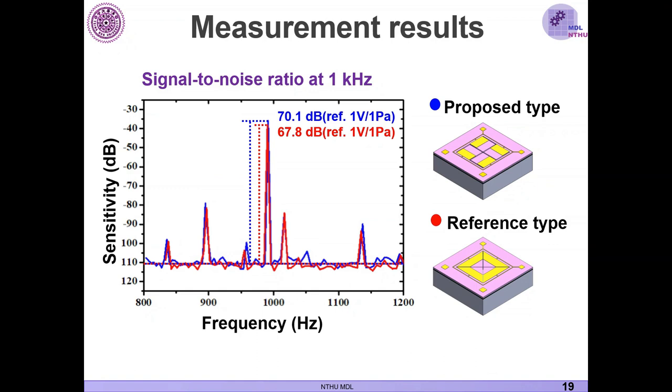Okay, so from the signal-to-noise ratio measurement result, we can see that the proposed type have 70.1 dB at 1 kHz. And for the reference type, the signal-to-noise ratio is 67.8 dB. And there is a 2.3 dB enhancement in the proposed type, which meets our expectations.